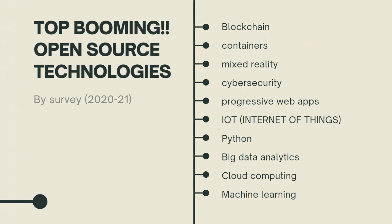These are the top booming open source technologies you can learn as a skill and then practice and use in open source. The list includes blockchain, containers, mixed reality, cyber security, progressive web apps, IoT, Python, big data analytics, cloud computing, and machine learning. You can find your favorite domain, embrace your skills, and contribute to real world projects and programs.